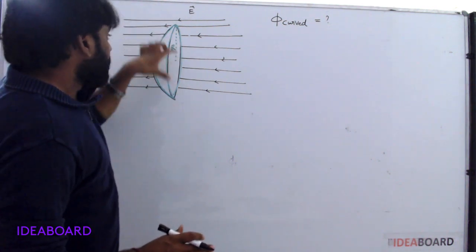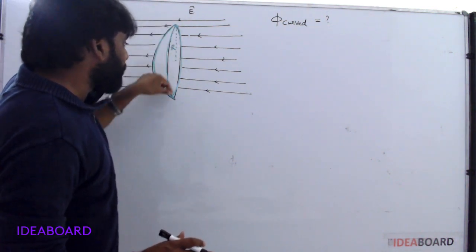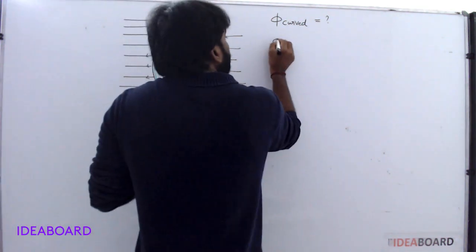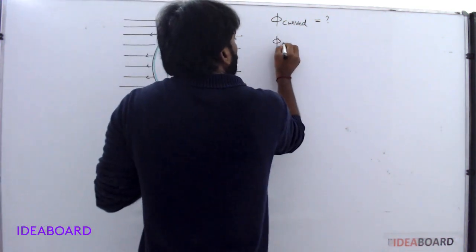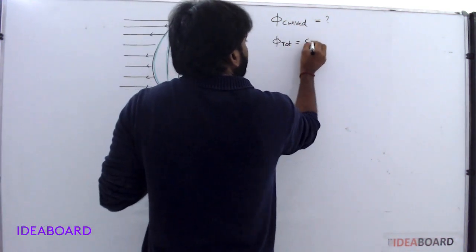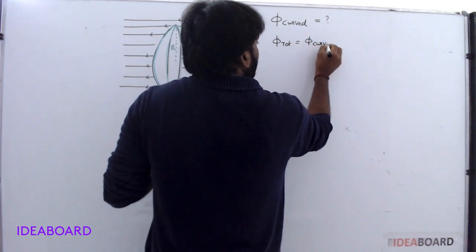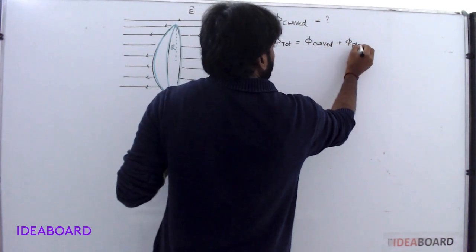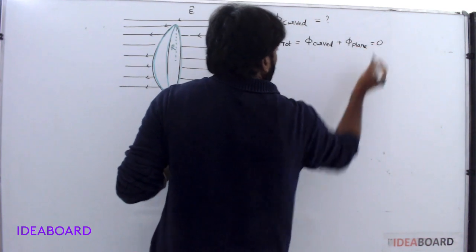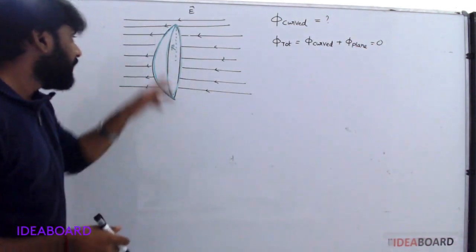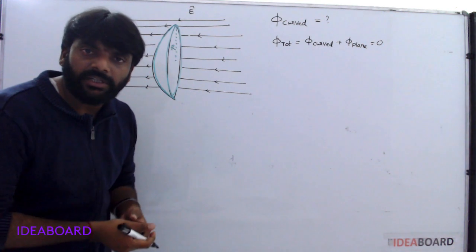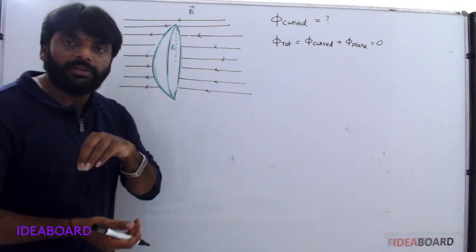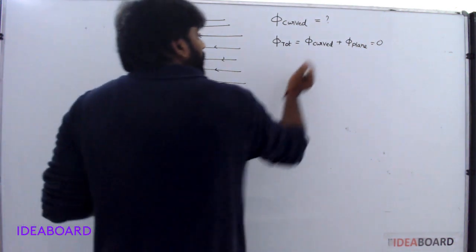The hemisphere has two surfaces: one is the plane surface and another one is the curved surface. Total flux through curved plus plane equals zero, because there is no charge inside — no charge means total flux is equal to zero.